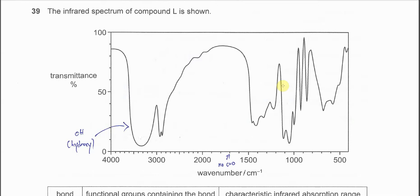Question 39, the infrared spectrum of compound L is shown. From this IR spectrum we know that it must be an alcohol because it has a broad absorption around 3,300.